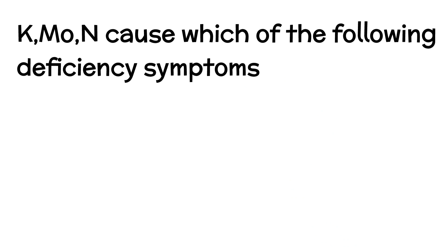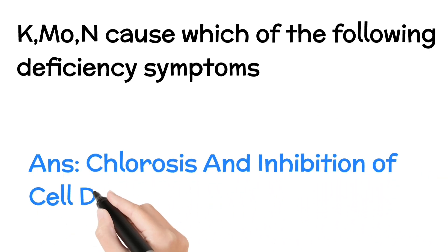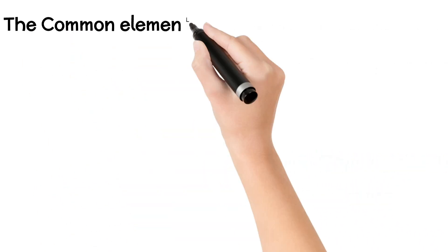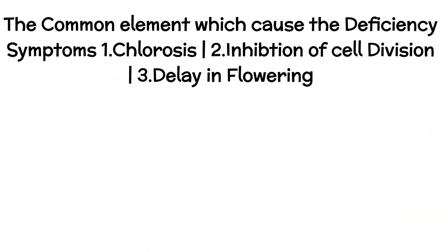Question 1: Potassium, molybdenum, and nitrogen cause which of the following deficiency symptoms? These elements are common in the deficiency symptoms chlorosis — 'Monks MaN Majorly Fear About Zindagi' — and inhibition of cell division — 'MONKS.' So the answer is chlorosis and inhibition of cell division.